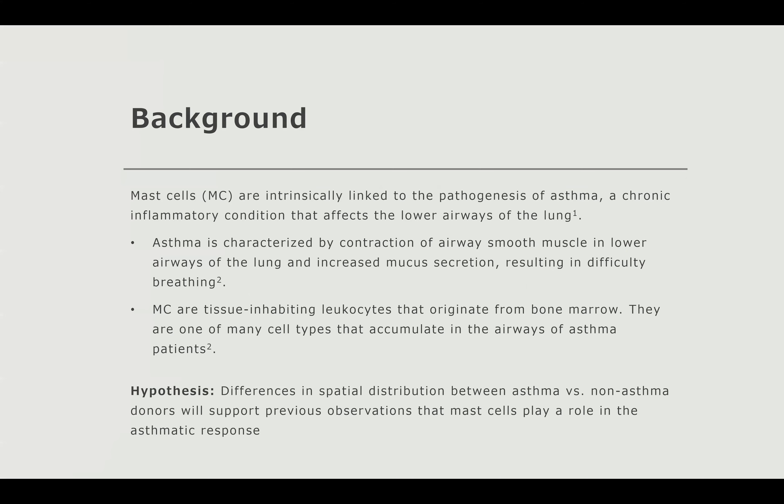A little bit of background. Previous research has shown that mast cells are linked to the pathogenesis of asthma. Asthma is a chronic inflammatory condition that affects the lower or more distal airways of the lung, characterized by contraction of smooth muscle in airways and increased mucus secretion, resulting in more difficulty breathing. Mast cells are leukocytes, or white blood cells, that inhabit tissues, originate from bone marrow, and are known to accumulate around the airways of asthma patients. We hypothesize that any differences we find in spatial distribution between asthma and non-asthma donors will support previous observations that mast cells do indeed play a role in the asthmatic response.